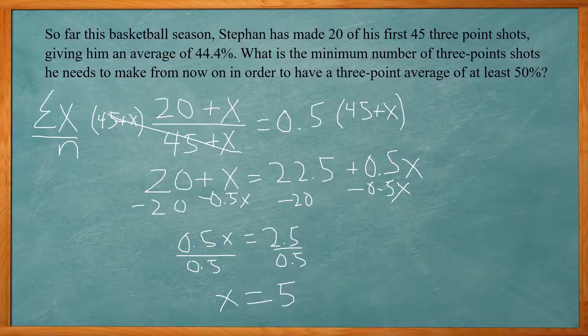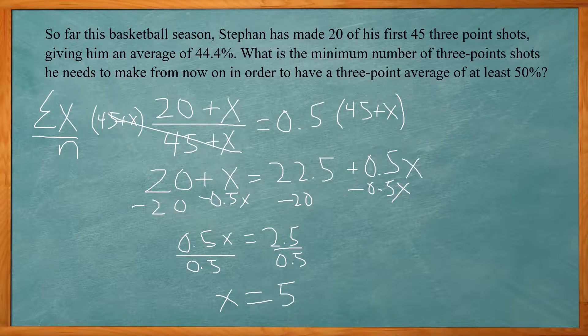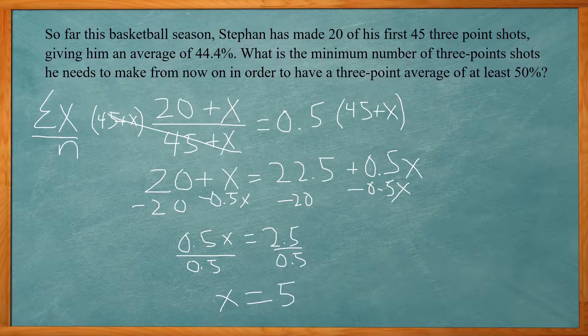And x is equal to 5. So he needs to make 5 three-point shots in a row in order to bring his average up to 50% or 0.5. So for all these questions, we've got to come up with our equation. We're basing it off the summation of x and we're going to replace our unknown with a variable x and solve for it. So I hope this video cleared up how to solve problems on ACT that involve averages.